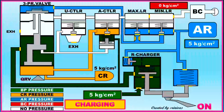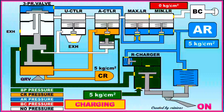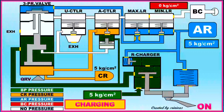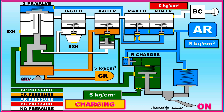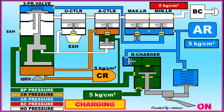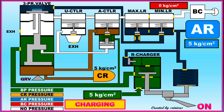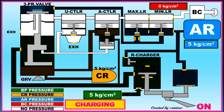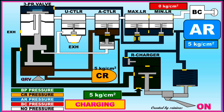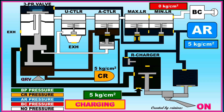At the same time, AR is also charging through the R charger. The green color indicates BP pressure in the DV. Yellow color indicates CR pressure in the DV. In the animation you are watching, the DV is charging — BP, CR, and AR are all charging at 5 kg per cm².